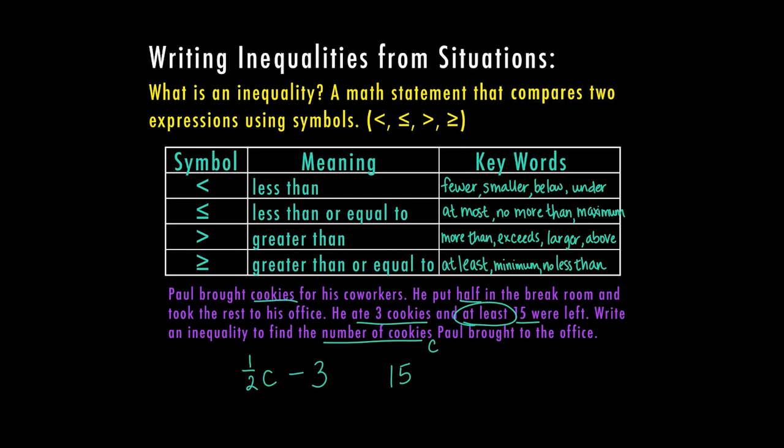If I look up here to the words at least, I can see that here in the greater than or equal to part of my chart. So I know that at least means greater than or equal to. Now you're not always going to have a chart with you. So let's talk about how to determine this. Well, if I'm saying that I have at least 15, that means I could have 15 or I could have more than 15. So if I see that word at least, I know that means I could have the same amount, which is equal to, or I could have more than that amount, which is greater than. So that's going to be a greater than or equal to symbol.